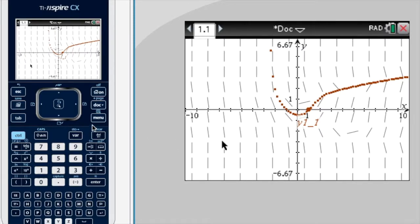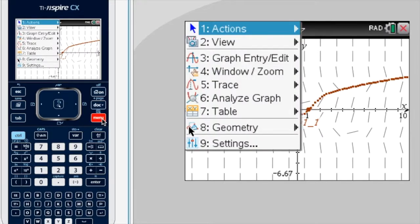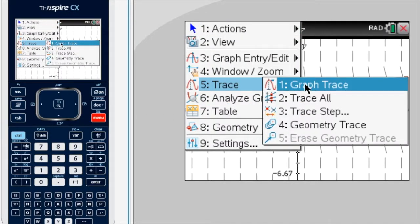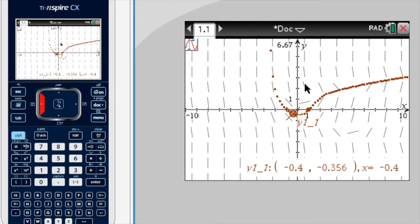So now I want to find out what f(2) is. So I go menu, trace, graph trace. I keep going across until I have a 2 in the x-coordinate.